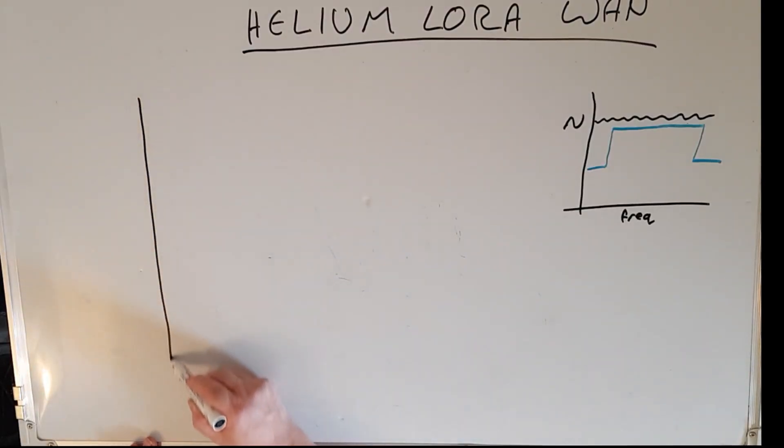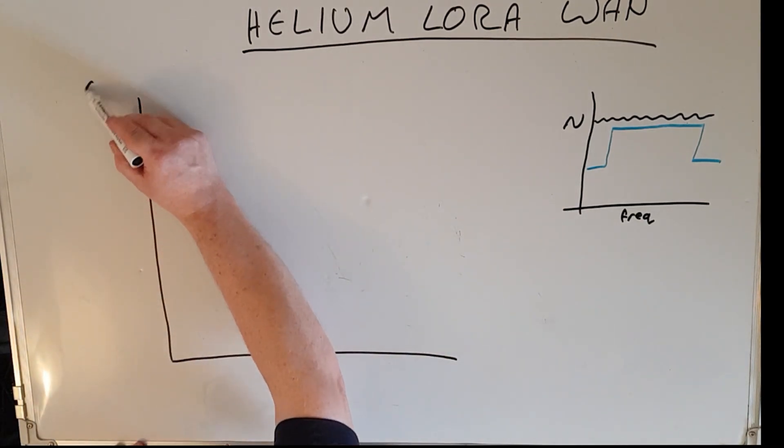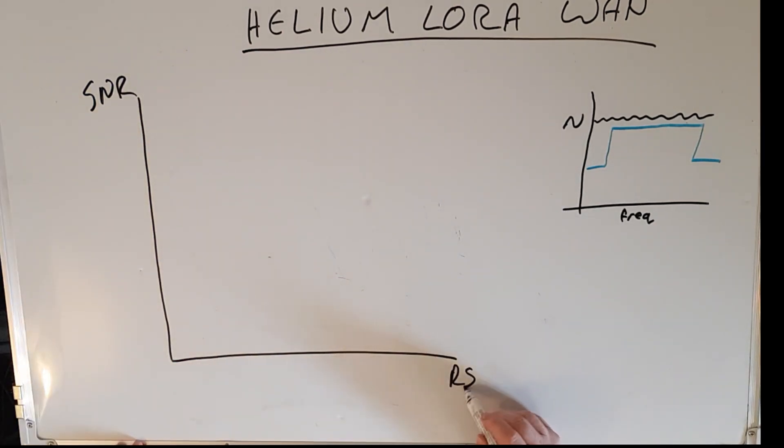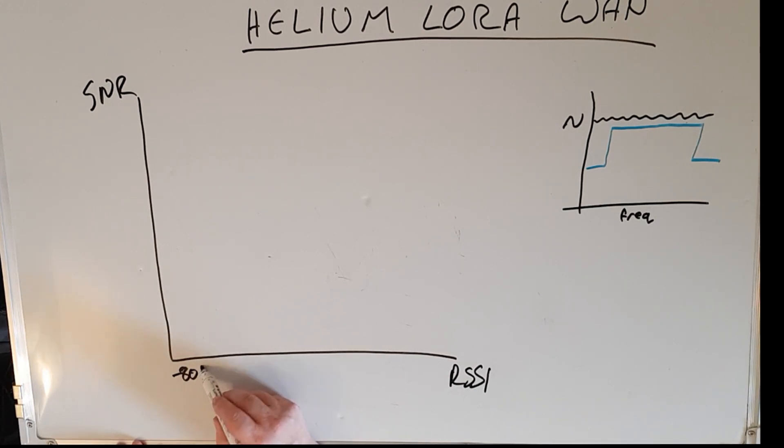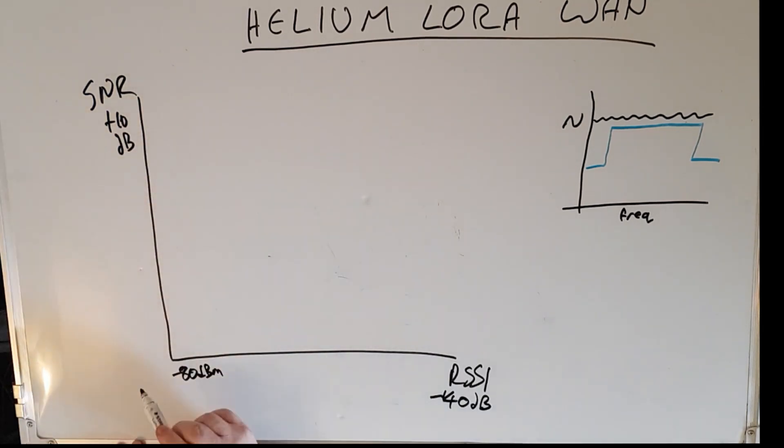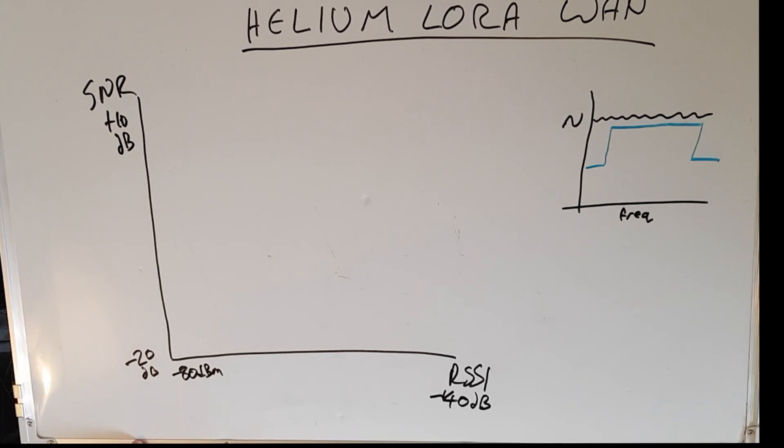When we consider noise, we need to have a look at a bit of a matrix. In this chart we have signal to noise ratio versus signal RSSI. Let's have the RSSI range from say minus 80 dBm to minus 140 dBm, and the SNR from plus 10 dB to minus 20 dB.